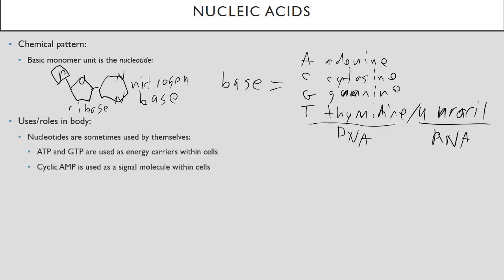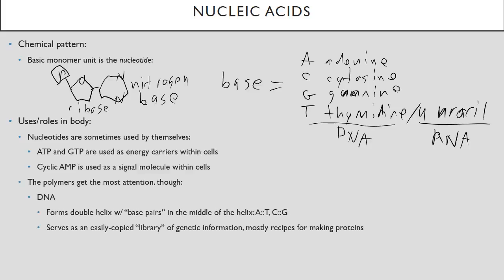Okay, so uses and roles in the body. I'm going to start with the lesser known ones first. Sometimes nucleotides are actually used by themselves. So, the adenine nucleotide can be turned into something called ATP. And the guanine nucleotide can be turned into something called GTP. And these are used as energy carriers within the cells. The adenine nucleotide can also be turned into something called cyclic AMP, which is used as a signal molecule within your cells.